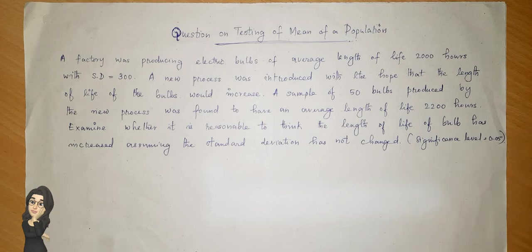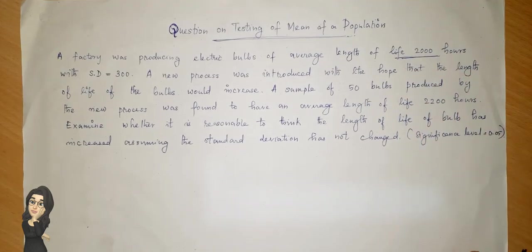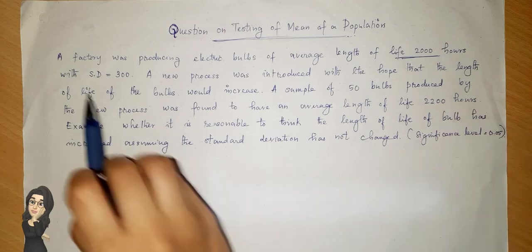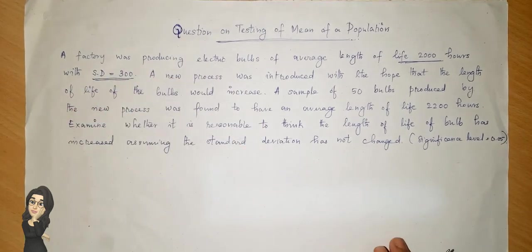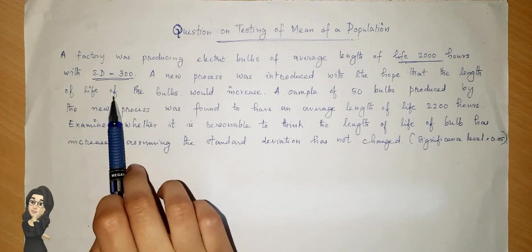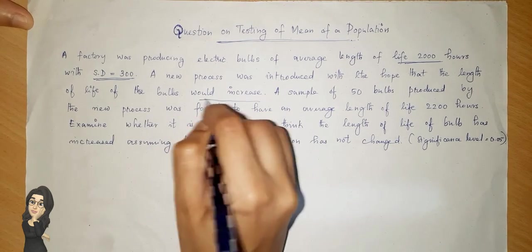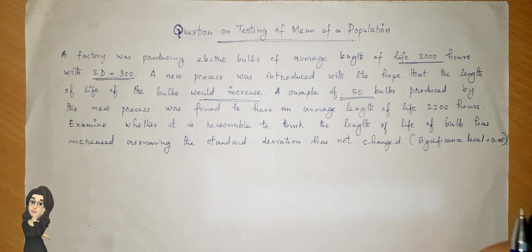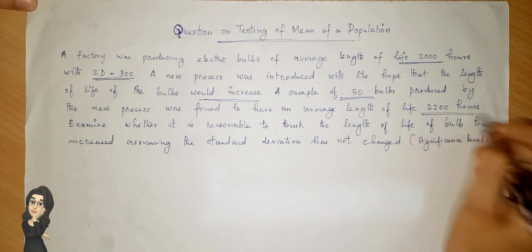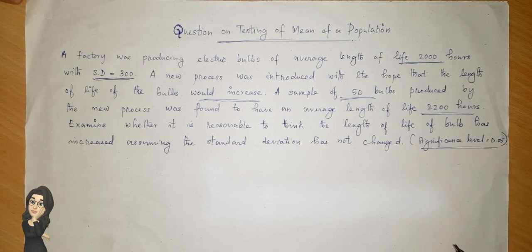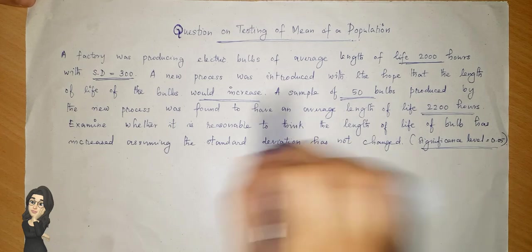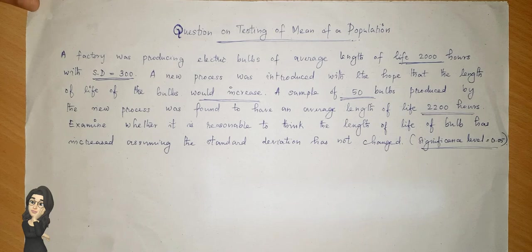The things to note here: previously the average length of life of the bulbs was 2000 hours from the population, and the standard deviation was 300. A new process was introduced with the hope that the length of life of the bulbs would increase. A sample of 50 bulbs was taken, its average is found to be 2200 hours, and we have a significance level of 0.05. We have to test whether the length of life of the bulb has increased.